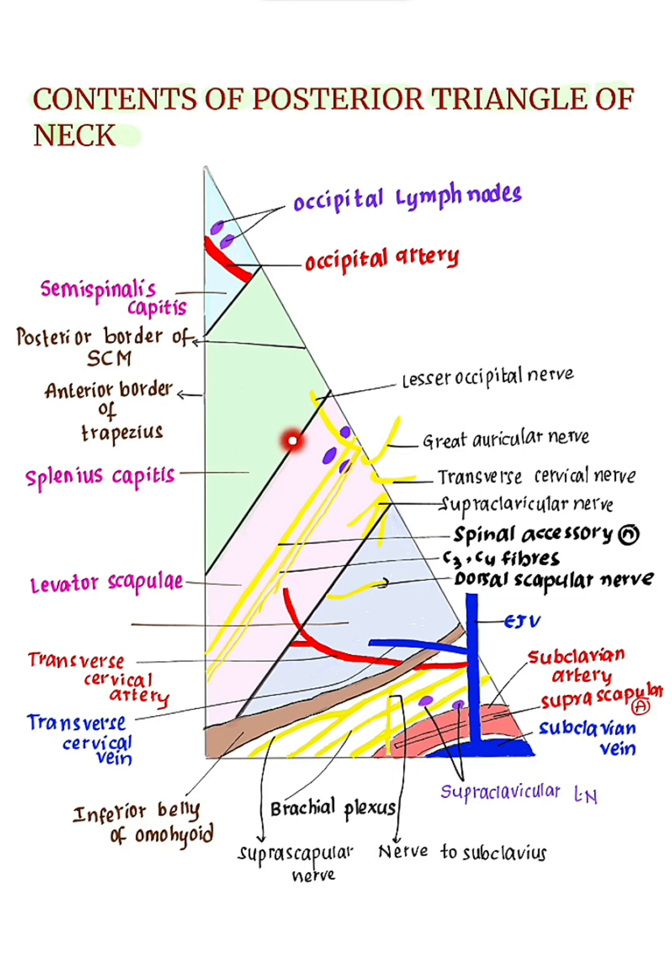Contents of the occipital triangle. Remember the categories: arteries, veins, nerves, and lymph nodes.